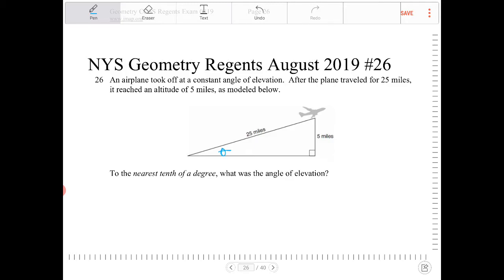The two sides relative to that angle will form a sine ratio. So I can say sine of theta is equal to opposite over hypotenuse, which is the side opposite is 5 and hypotenuse is 25.